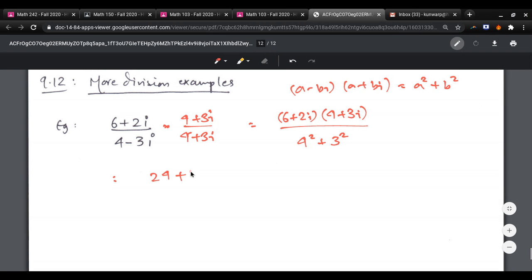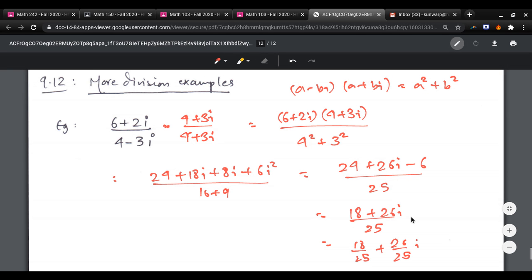Foil out the top. 24 plus 18i plus 8i plus 6i squared over 16 plus 9. That's going to give you 24 plus 26i minus 6 over 25, which is 18 plus 26i over 25. And then you split this as 18 over 25 plus 26 over 25 times i.